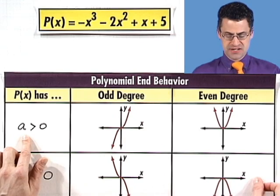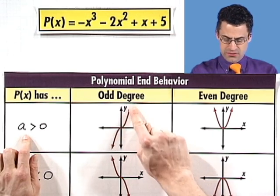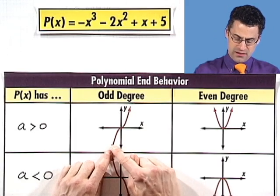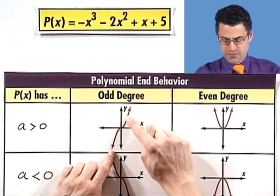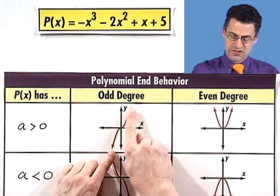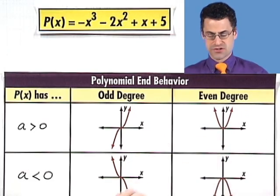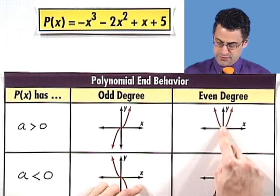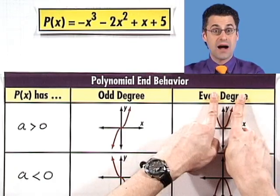If a, the leading coefficient, is positive and we have an odd degree, it's going to have this general shape where we start off way down on the left at negative infinity and rise up to positive infinity. We might have wiggles in between, but the end result is up to positive infinity. With even degrees, we have that smiley face-type picture. The ends are always going to be pointing up.